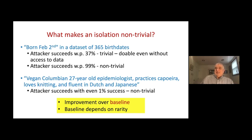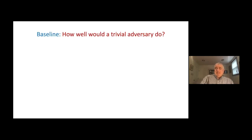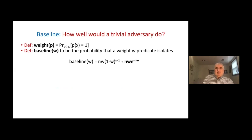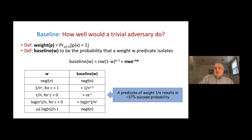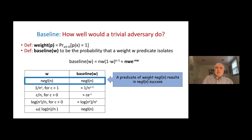We can formally define the weight of a predicate as the probability that it evaluates to true. Then the baseline is the probability that an attacker without any data access manages to isolate with a predicate of that weight. A simple calculation gives the formula. If the predicate has weight roughly 1/n, the baseline is about 37%. But if you plug a negligible weight into the formula, the baseline is also negligible — and this is the case we'll focus on.